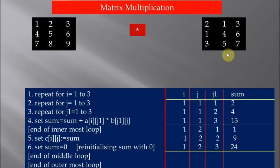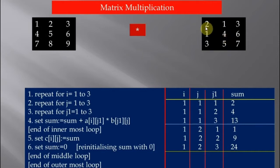Here I have written the algorithm that you can understand very easily. This is our first matrix A and second matrix B, and the resultant matrix will be C. The outermost loop — repeat for i equal to 1, 2, 3 — is used for traversing the rows of the first matrix.